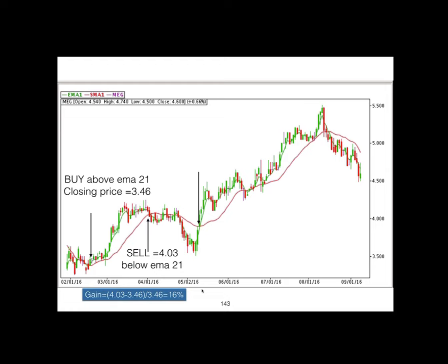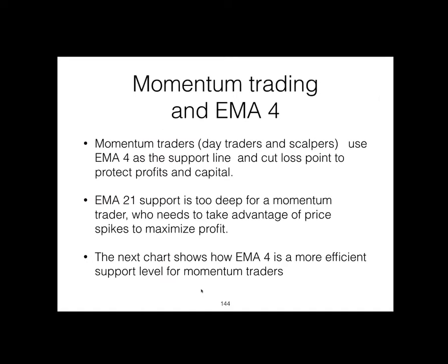He buys back his shares in May 2016 at the close of 4.05, holds the position, and sells a month later in June at a gain of 5.6%. Now when you're a momentum trader you do not use EMA21 as your support line — you use the 4-day EMA as your support line. Momentum traders include day traders and scalpers. You use the EMA4 line because it is higher and you want to protect as much of your profits as possible. EMA21 support is just too deep for a momentum trader who needs to take advantage of price spikes to maximize profit.